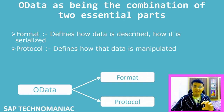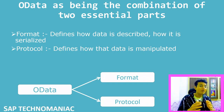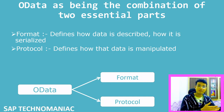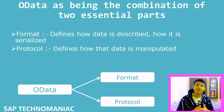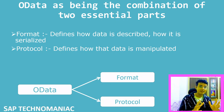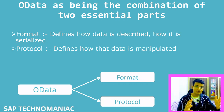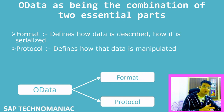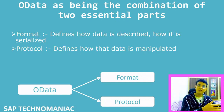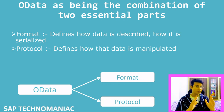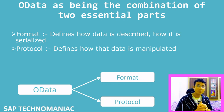Format defines how data is described and how it is serialized. For example, in real-time business data we have sales orders, sales order items, products, and purchase order items. We need to display the data in a serialized way — first all sales orders come, then items, then products. This kind of serialization requires us to define a format for how our data should look.